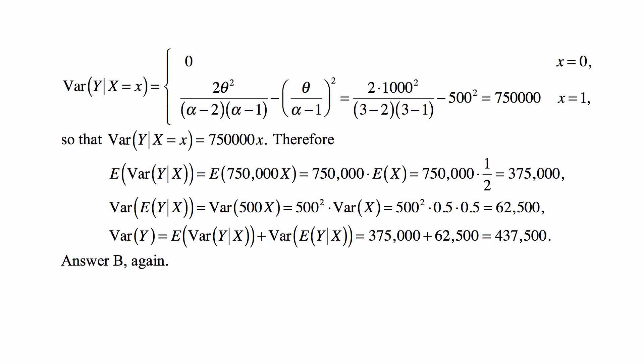And the variance of Y is E[Var(Y|X)] + Var[E(Y|X)]. So it's just the sum of the two things we just calculated, which is 437,500, answer B, again.